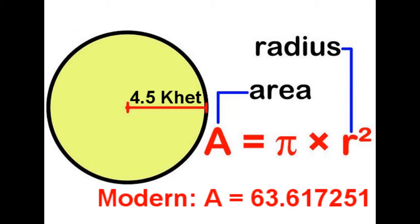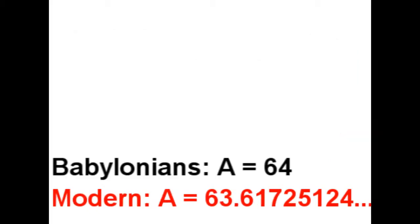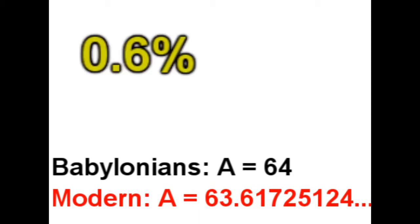So our solution of 63.617251, on and on, compared to 64, is very close. It's a very close answer. I mean, the absolute relative error percentage is only 0.6%. So it's not a bad calculation at all for the time of the Babylonians.